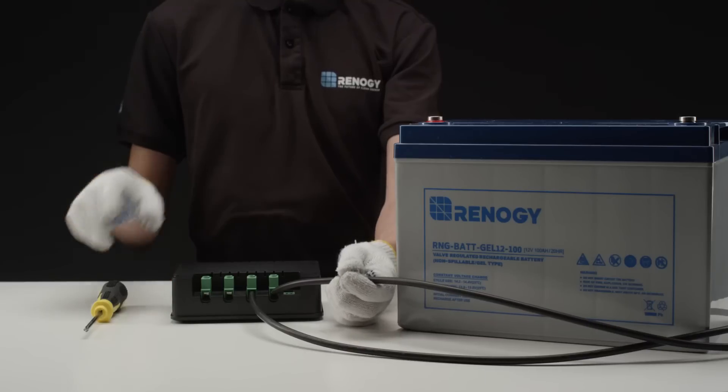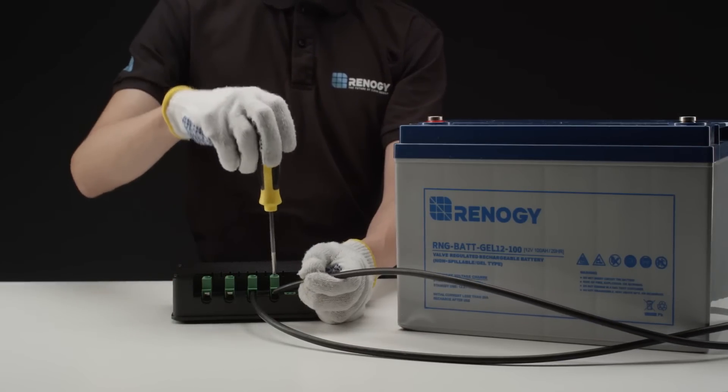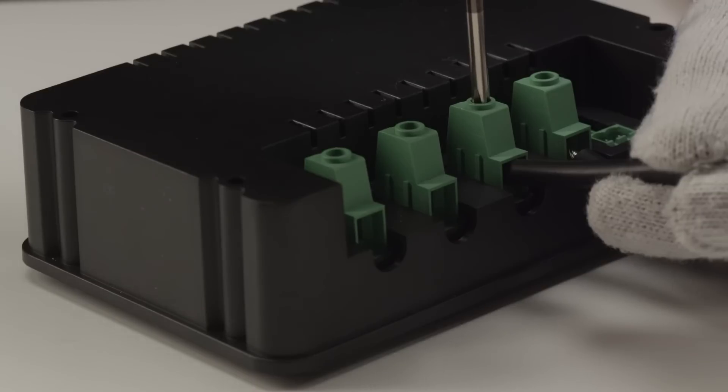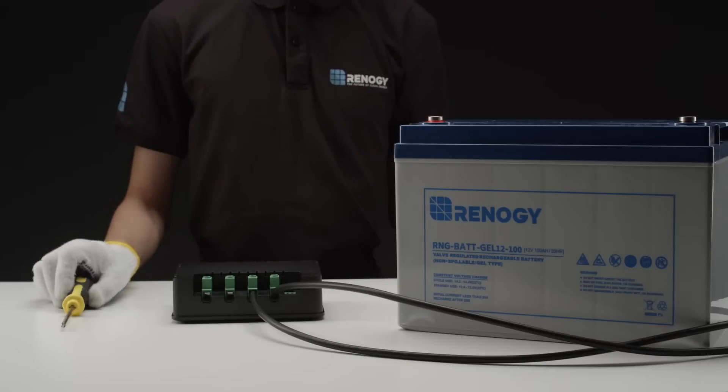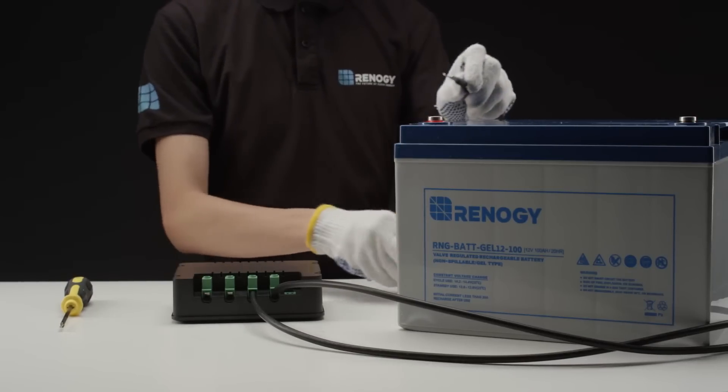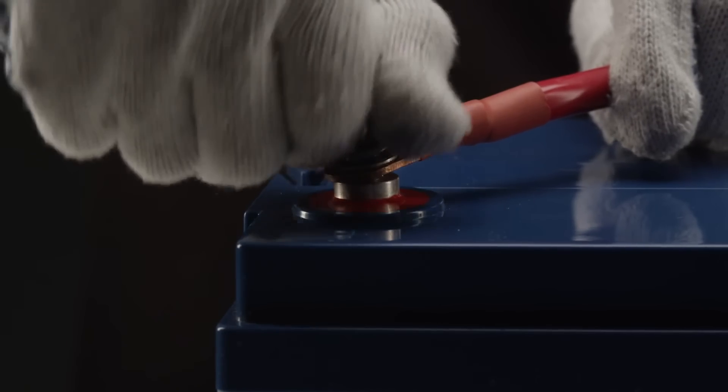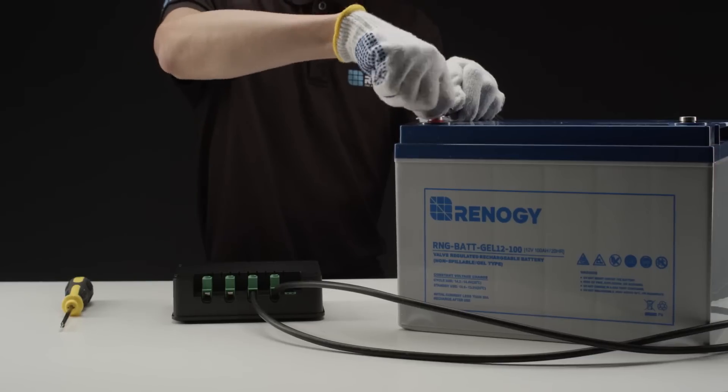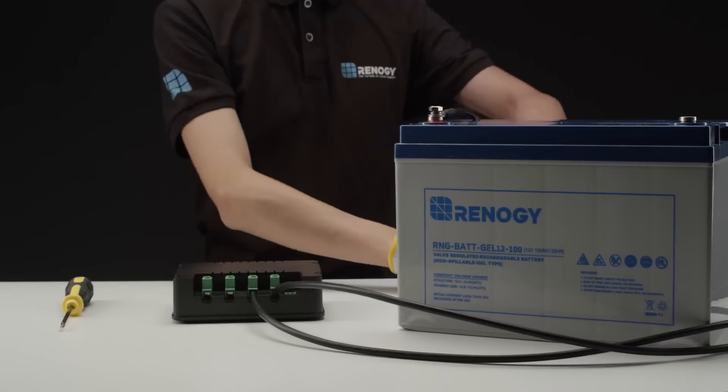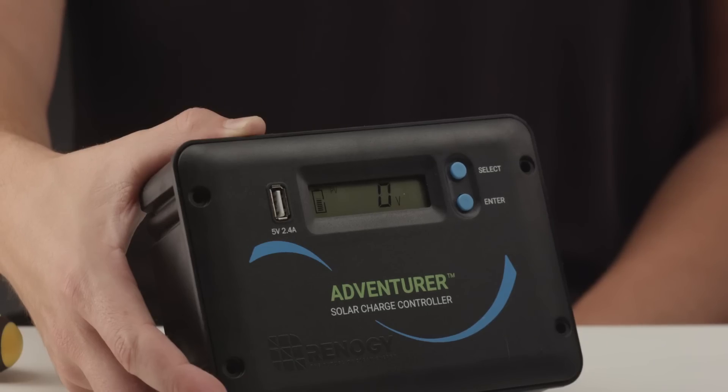We will start by connecting the adventurer to a 12 volt battery. The tray cable will be used to connect the adventurer to the battery terminals. Connect the tray cable to the adventurer first, then connect one tray cable at a time to the battery. Make sure the wire is completely inside the adventurer terminal for safety and performance. The controller will power on as soon as the battery is connected.